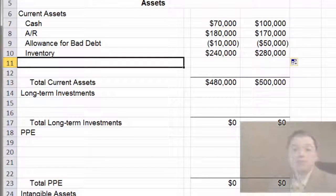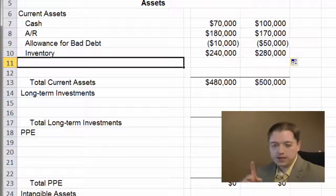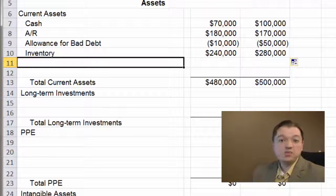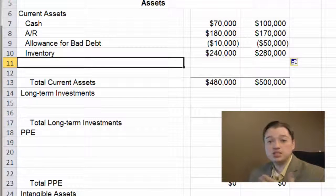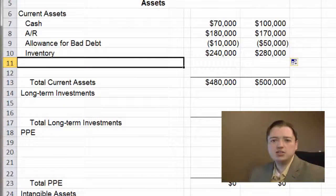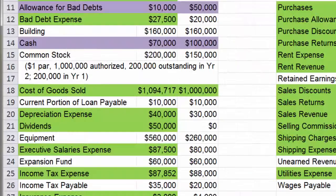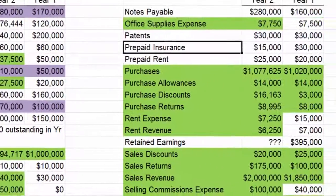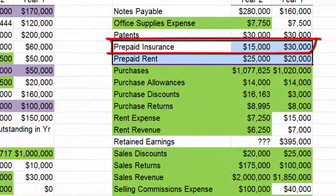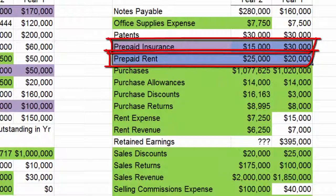The next assets are typically our prepaids: prepaid rent, prepaid insurance, could be supplies that I purchased in advance and then I'm going to use up this year. But those are the next accounts that we use. And that's the case here. We have two prepaids. Let's go back to our raw data. And we have a prepaid insurance and a prepaid rent. So we're going to use those next. So let's put it in the same order: prepaid insurance and prepaid rent.